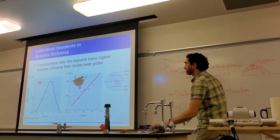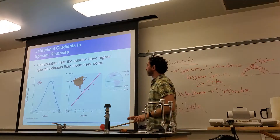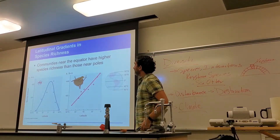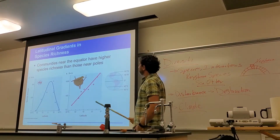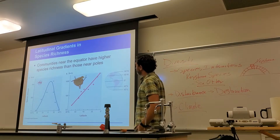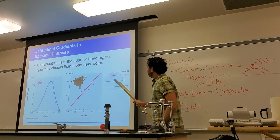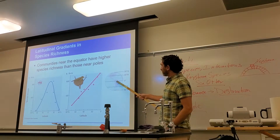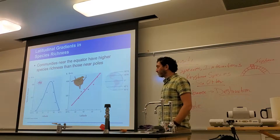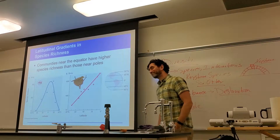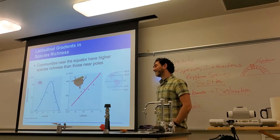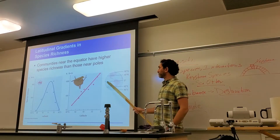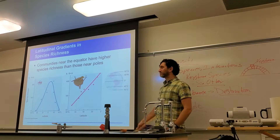We also see differences in diversity and richness based upon latitude. There's greater diversity in the tropics than there are at the poles. Any guesses on why this might be? Why do you get more species living in the tropics than you do at the poles?